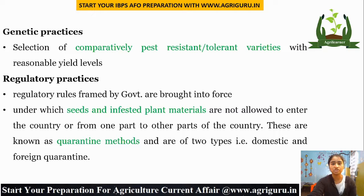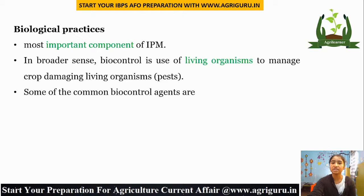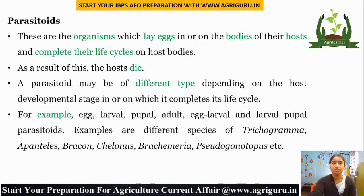Biological Practices is the most important component of integrated pest management. In a broader sense, biocontrol is the use of living organisms to manage crop-damaging organisms, i.e., pests. Common biocontrol agents are parasitoids and parasites. Parasitoids are organisms which lay eggs in or on the bodies of their hosts and complete their life cycles on the host body, as a result of which the host dies. Types include egg parasitoid, larval parasitoid, pupal parasitoid, adult parasitoid, egg-larval parasitoid, and larval-pupal parasitoid.